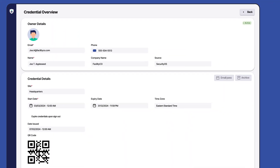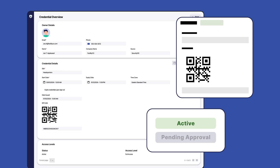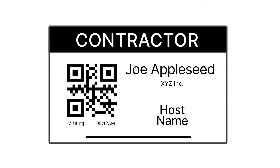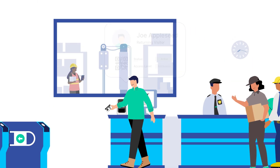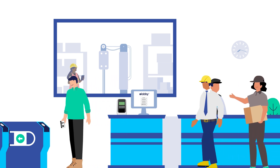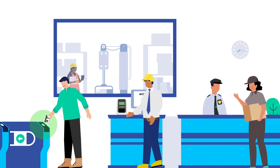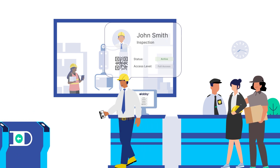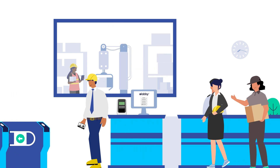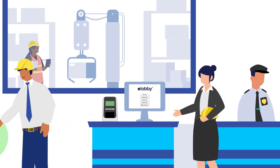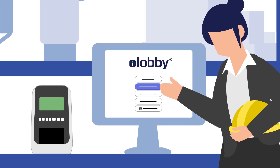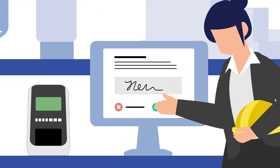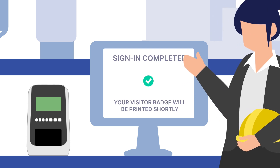SecurityOS helps you securely issue, track and manage physical access to your facility. Whether hosting events, bringing in guests or granting access to contractors for routine maintenance, SecurityOS can issue single-use or recurring use credentials that are tailored to meet your facility's evolving needs. Regardless of whether you use iLobby-provided access control hardware or choose to integrate SecurityOS with your current access control system, you're covered.